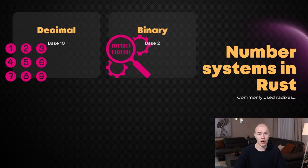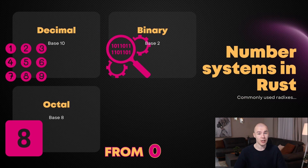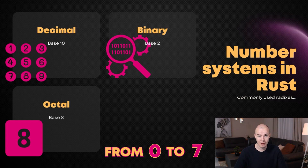The third option is going to be the octal number system, where the base is number 8. So we actually have 8 different digits that we can use to represent any number — we're talking about numbers from 0 all the way to 7. So 8 and 9 are not allowed to be used in the octal number system.